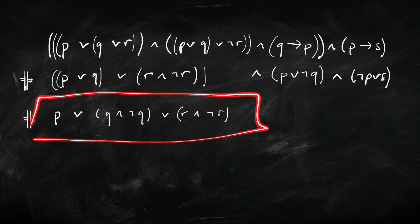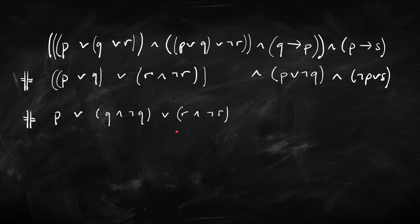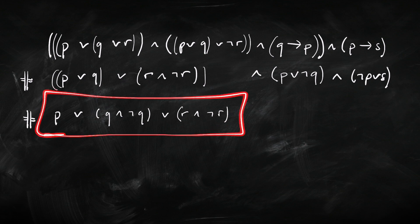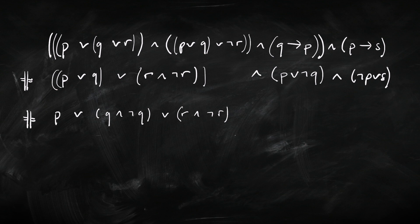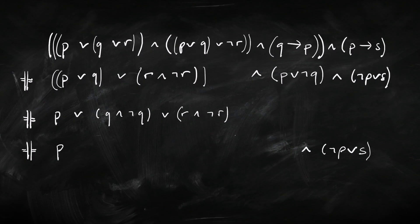Let's focus on this conjunct here. One thing we can notice is it's a disjunction where the second and third disjuncts are both contradictions: Q-and-not-Q, and R-and-not-R. They can't be true because Q can't be true and false at the same time, and neither can R. This disjunction is true just in case one of the disjuncts is true — but those two can't be true. So this whole thing is equivalent to P on its own, and we can rewrite it as just P.